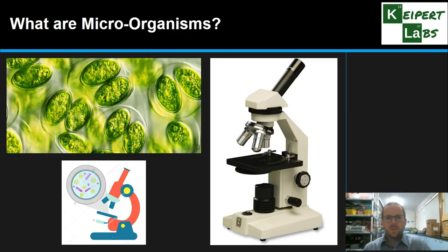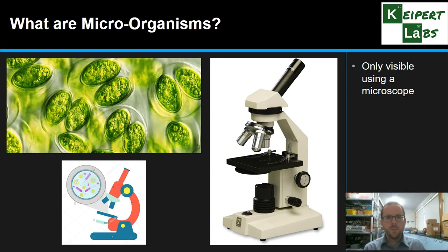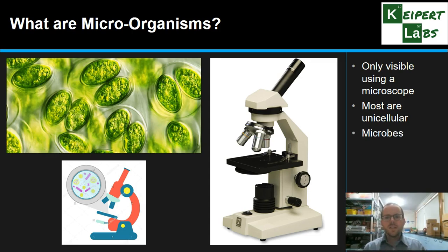What do we mean by microorganisms? What are they? Essentially, microorganisms are those organisms that are only visible using a microscope. The 'micro' in the name implies the size we're talking about — they're really, really small, typically only a single cell, so most of them are unicellular, which is the scientific word for one cell. We also call them microbes as a kind of nickname.